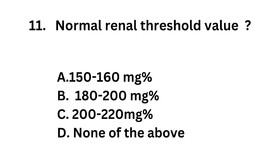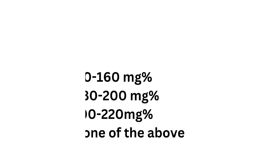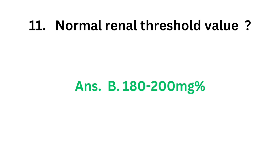Question number 11. Normal renal threshold value: Option A: 150 to 160 mg%. Option B: 180 to 200 mg%. Option C: 200 to 220 mg%. Option D: None of the above. The correct answer is option B, 180 to 200 mg%. Normal renal threshold value is 180 to 200 mg%.